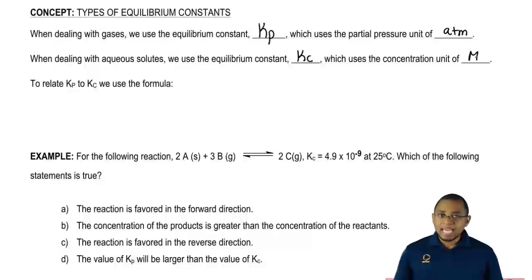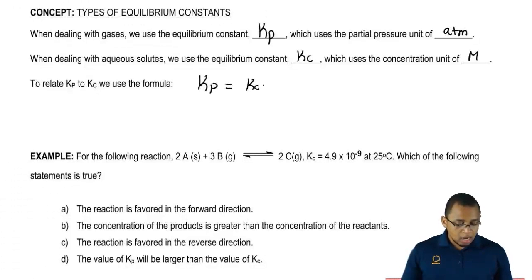We've seen that we have Kp and Kc now. We're going to say that these two are related together by this equation, Kp equals Kc RT to the delta N.